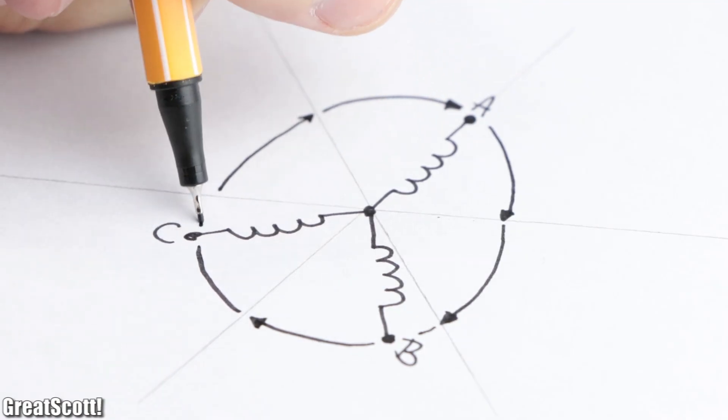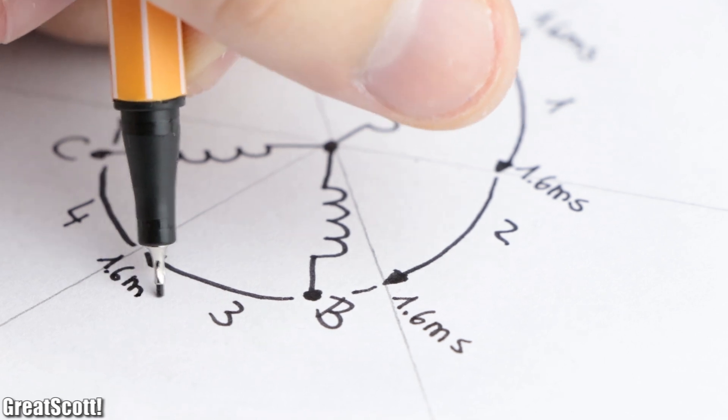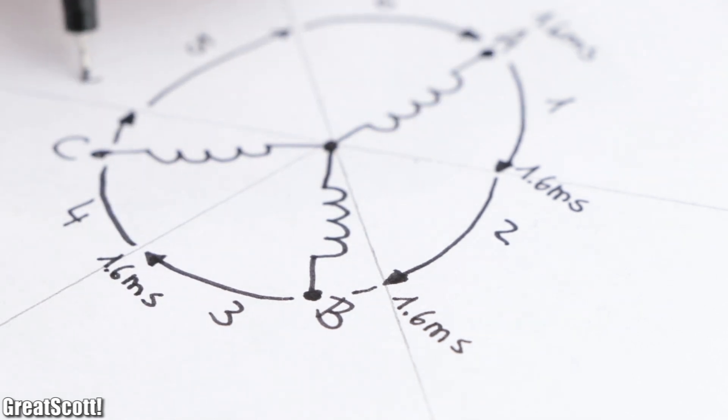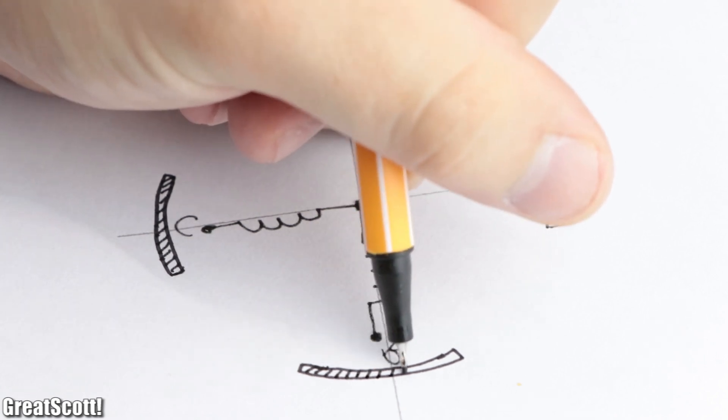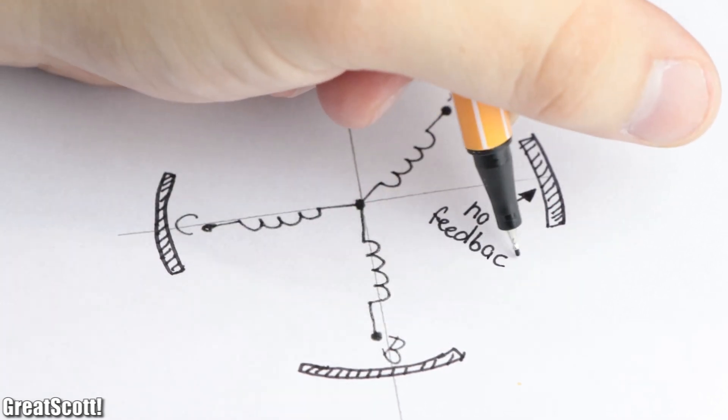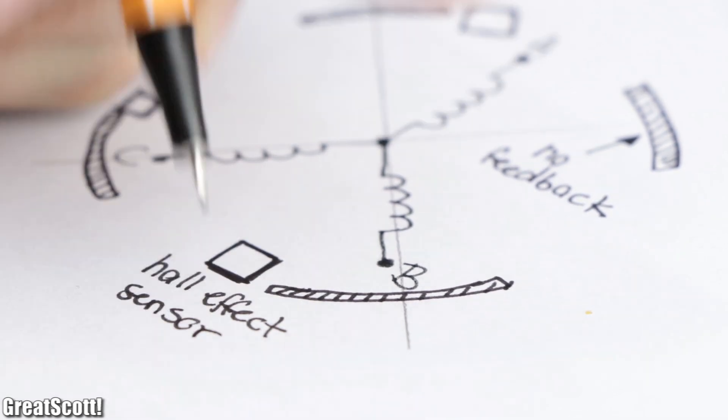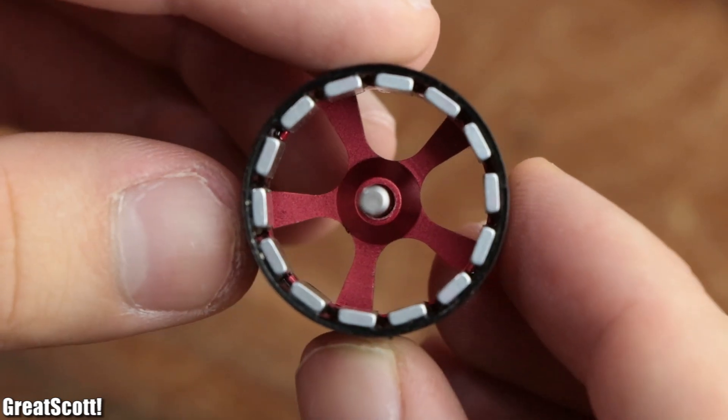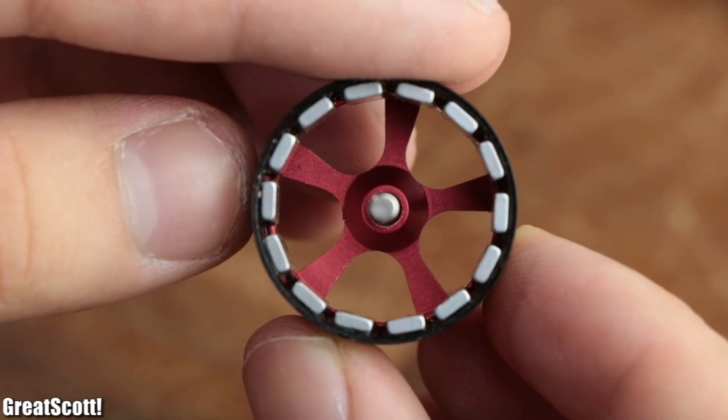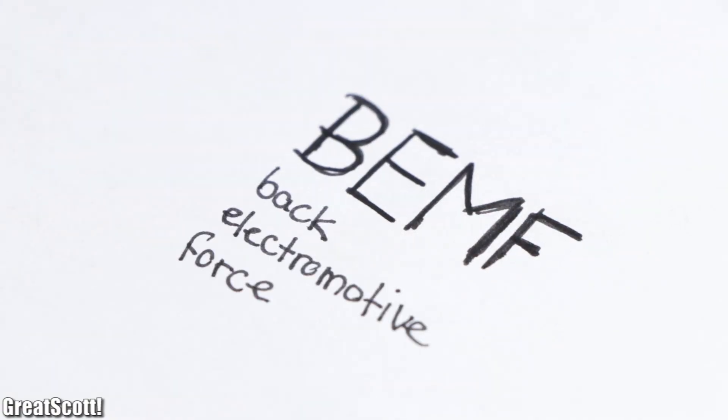So far we use timer 1 to switch between the six different steps with a cycle duration between 80 and 1.6 milliseconds. That means we dictate when the next step should occur, but what we didn't care about so far was at which point exactly the magnets reached the ideal position to switch to the next step. For that we would need a feedback system like hall effect sensors that tell us where the rotor is currently located. But since our BLDC motor clearly does not feature such sensors, we have to use another technique called BEMF or back electromotive force.